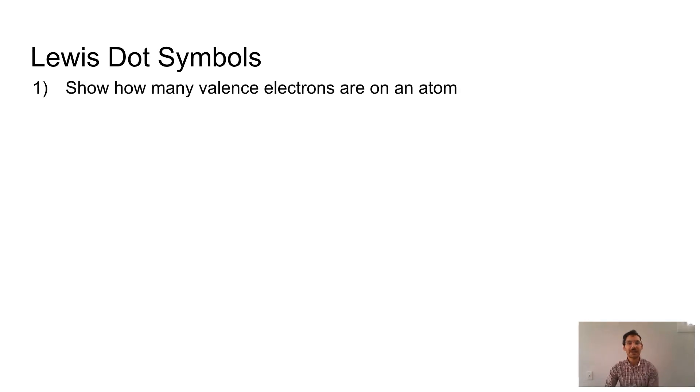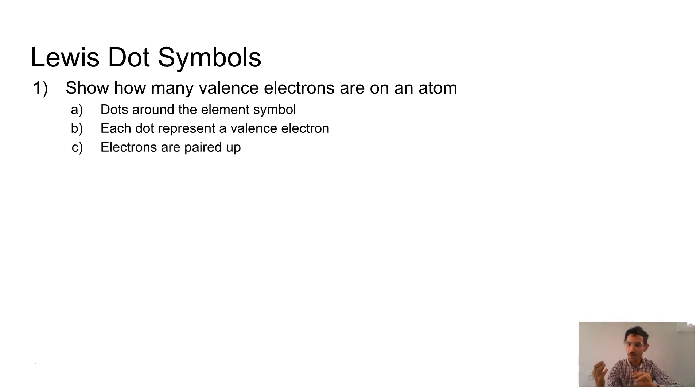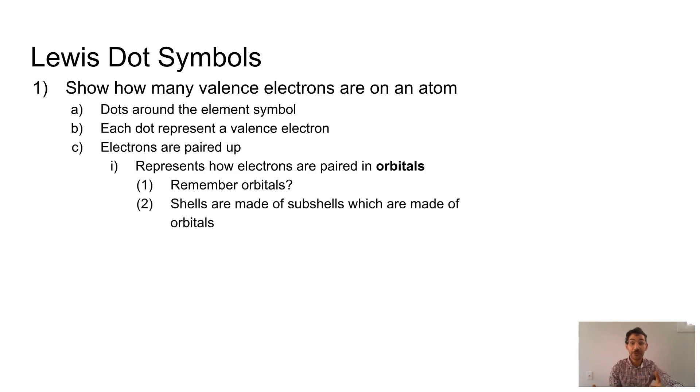So Lewis dot symbols, we mentioned those at the beginning of the video, those show us how many valence electrons there are on an atom. And we use little dots around our element symbol to show electrons. Each dot represents a valence electron because those are the electrons we really care about. Those are the electrons that do chemistry. So we keep our valence electrons paired up usually, and that represents how electrons are paired up in those orbitals. Remember those orbitals? We talked about them in the past. So shells, those big shells like from our Bohr model are made up of subshells, and those subshells are made up of orbitals. And each orbital holds two electrons.